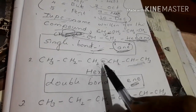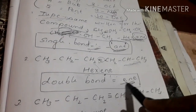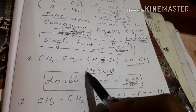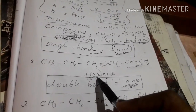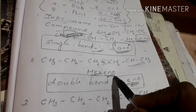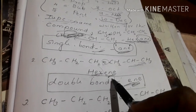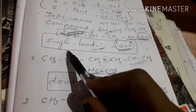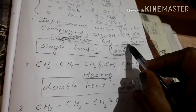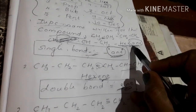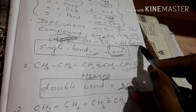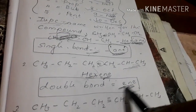The double bond suffix is 'ene'. We use 'ene' for double bond. Single bond is 'ane', and double bond is 'ene'.